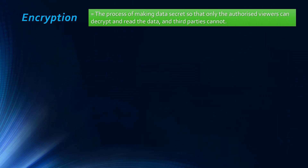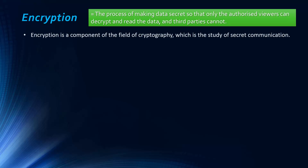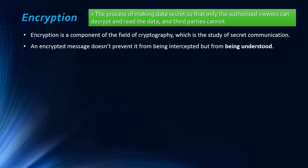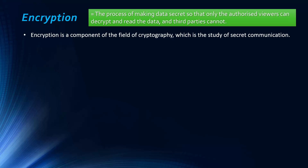Encryption is a process of making data secret, and the purpose of this is so only authorized viewers can read the data and decrypt the message, while third parties cannot. It's a component of a field called cryptography, which is the study of secret communication. You would have heard of things like Enigma and the team at Bletchley Park in World War 2 — they were cryptographers. A lot of encryption has come through wars initially, and now it's used massively because of the internet.